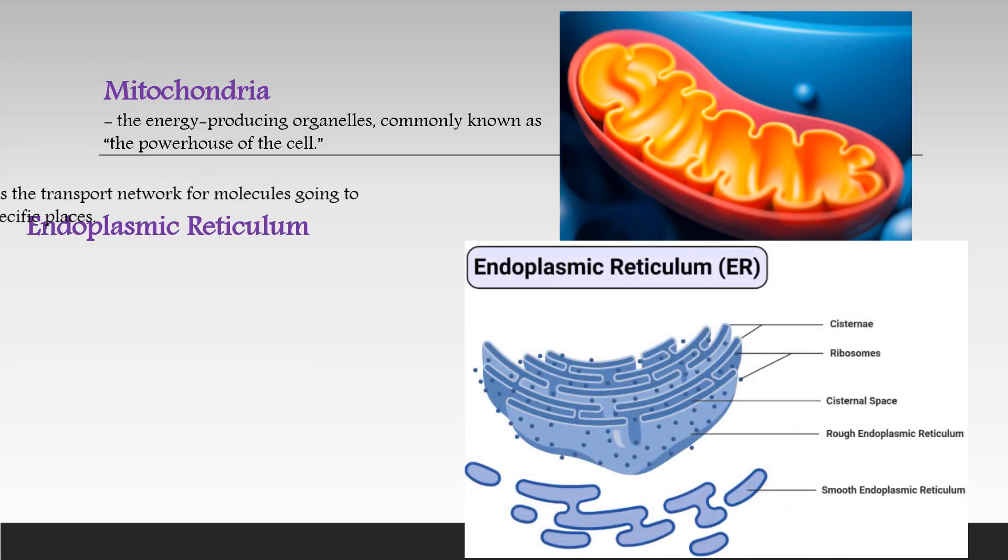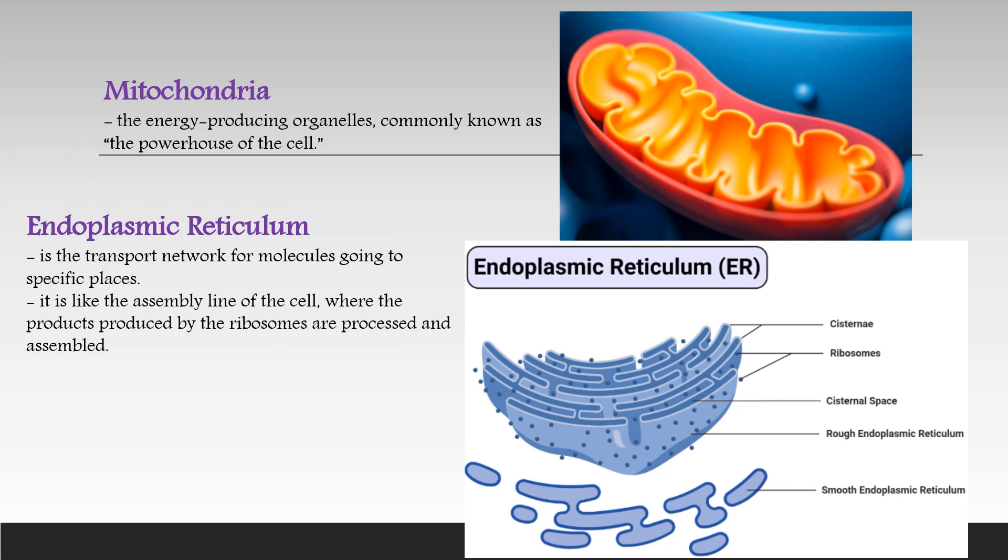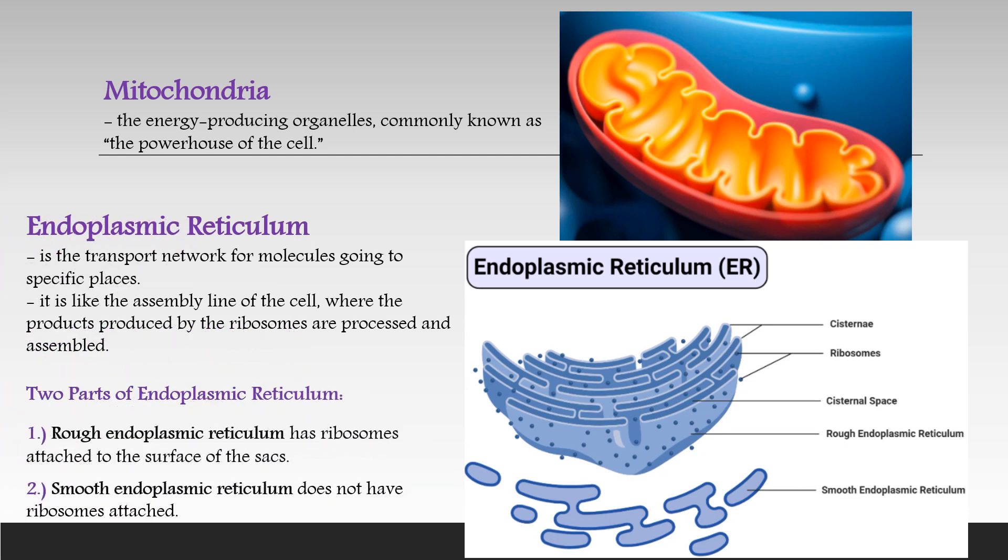The endoplasmic reticulum is the transport network for molecules going to specific places. It is like the assembly line of the cell, where the products produced by the ribosomes are processed and assembled. There are two parts of the endoplasmic reticulum: rough and smooth endoplasmic reticulum. Both help with the production and storage of proteins.